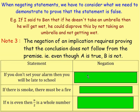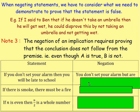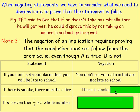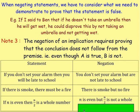Consider these statements. Statement 1: 'if you don't set an alarm, then you will be late for school.' To disprove that, keep the first part the same — don't set an alarm — but change the next bit: you don't set your alarm but you're not late to school. Statement 2: 'if there is smoke, there must be a fire.' To disprove that: there is smoke, but there is no fire. Statement 3: 'if n is even, then n ÷ 2 is a whole number.' The negation would be: n is even, but n ÷ 2 is not a whole number.